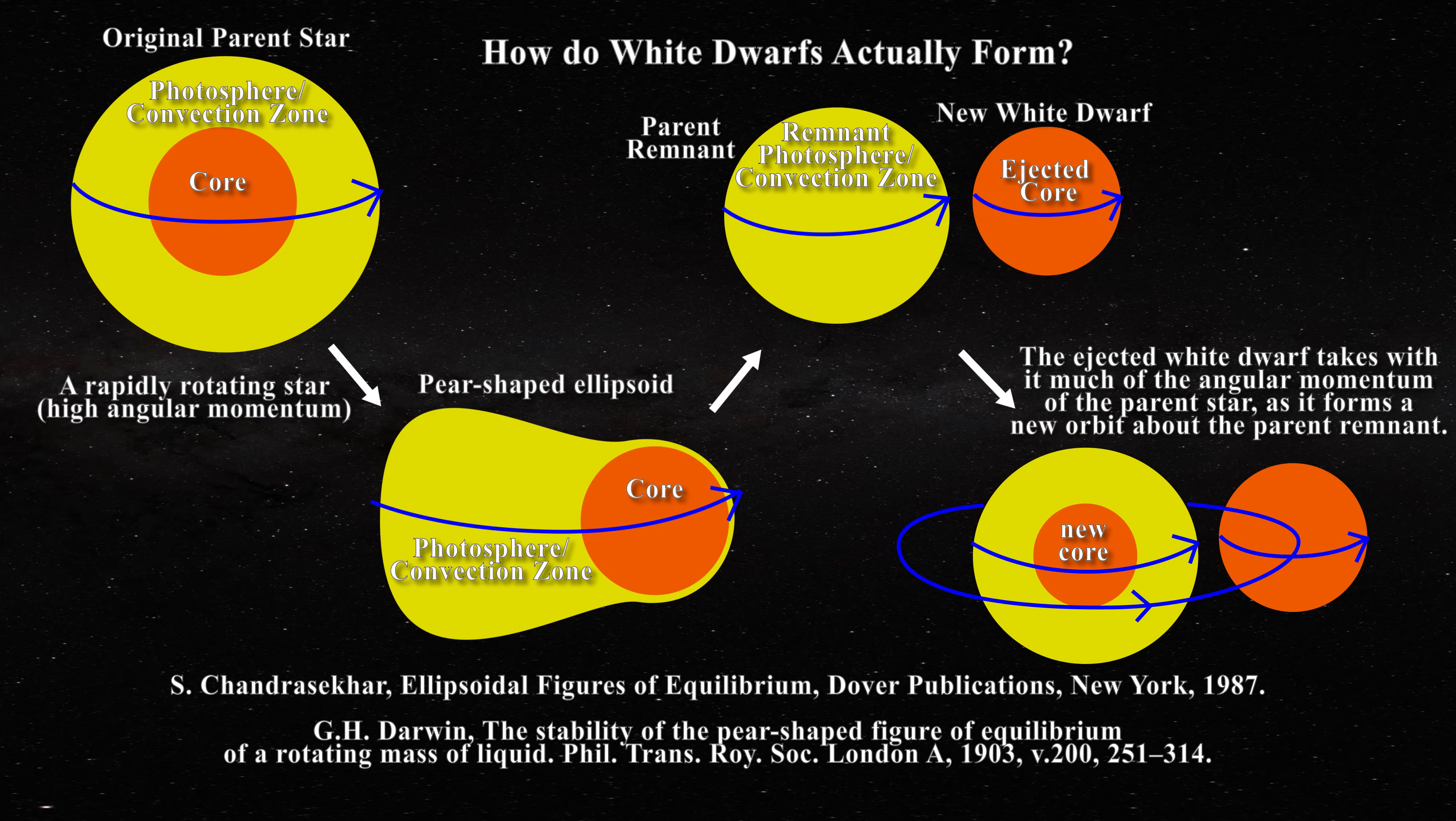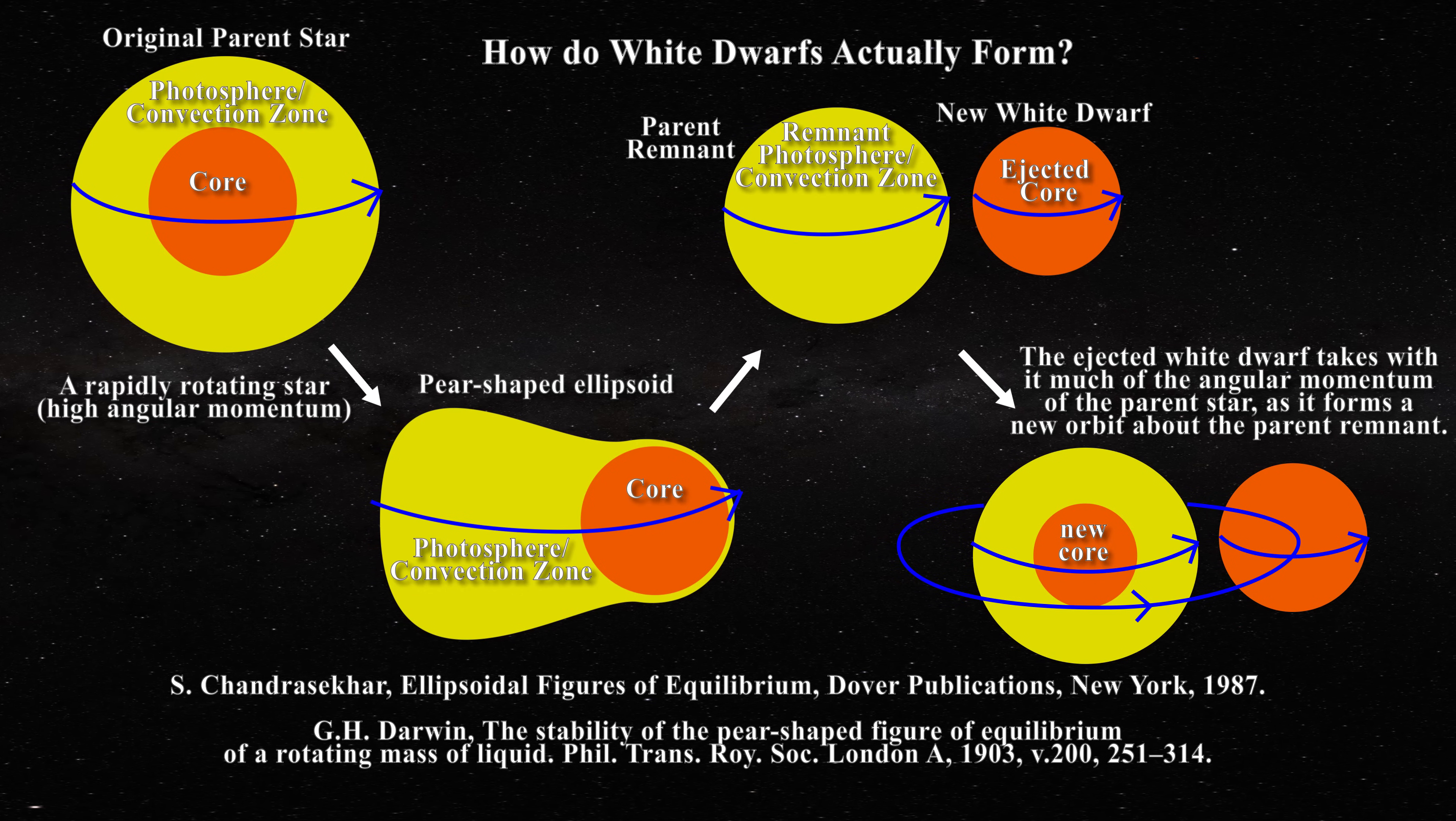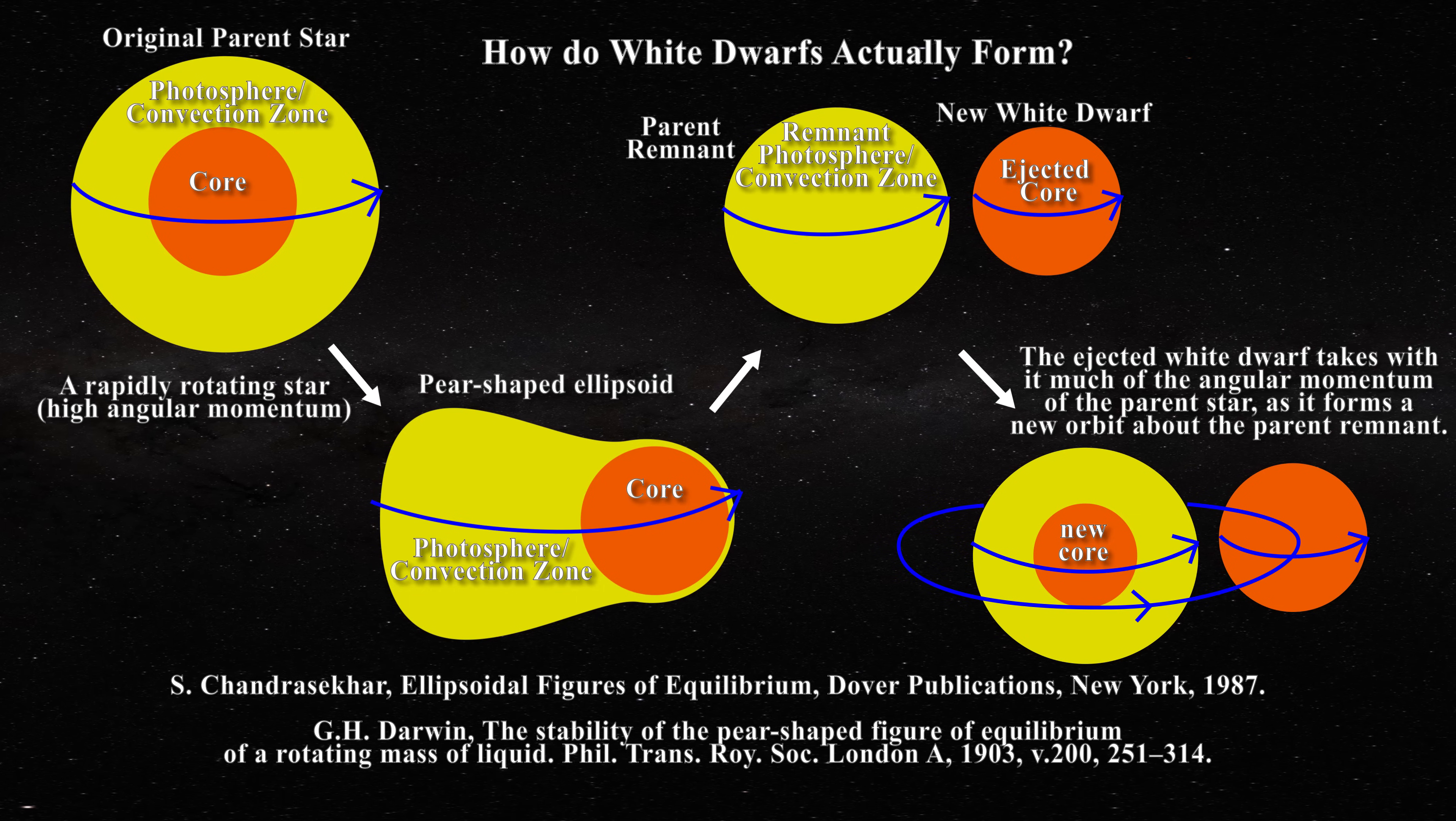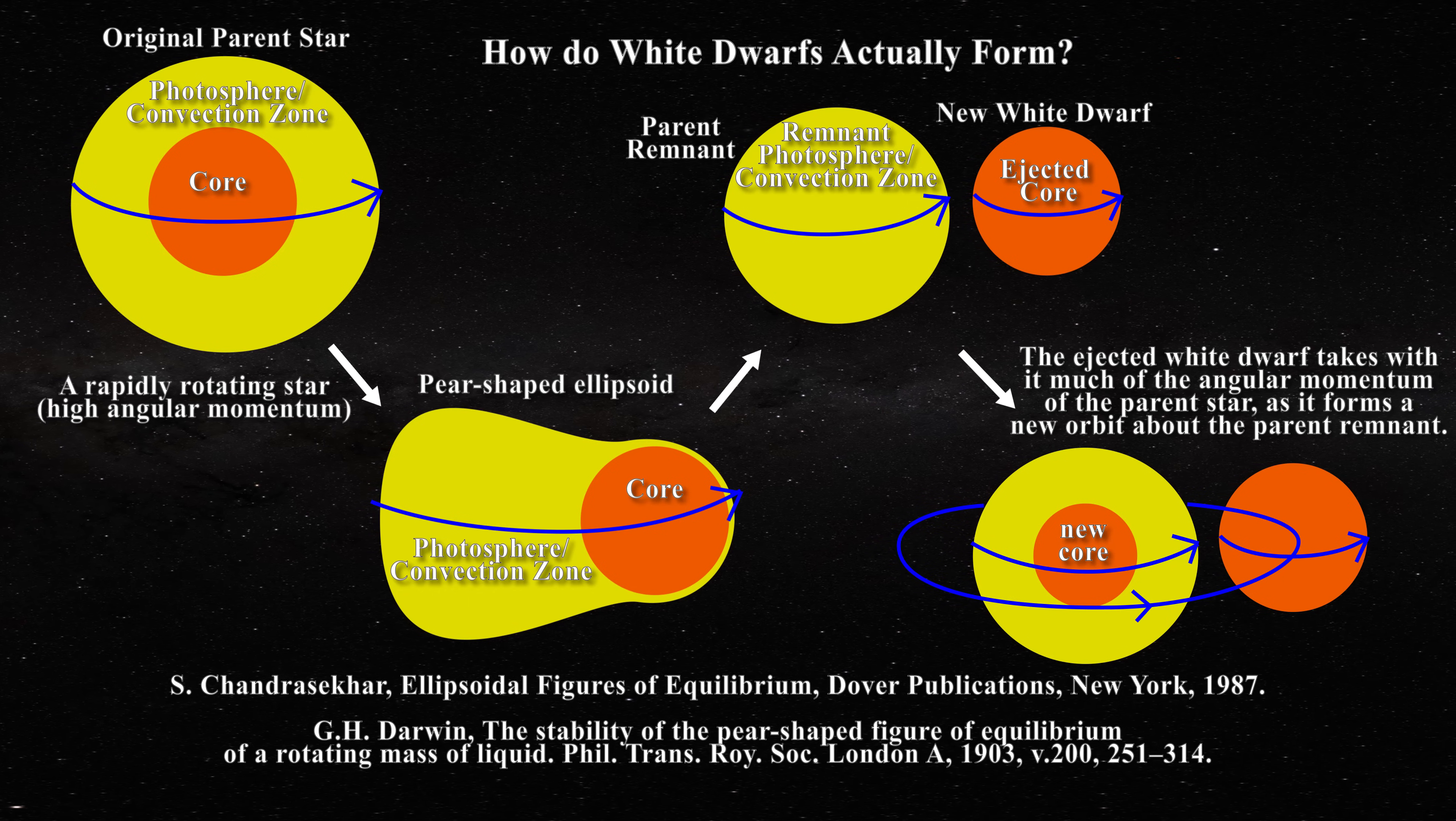Since so many binary star systems exist, such a mechanism is reasonable and could account for systems such as Sirius A and B, for instance. The white dwarf, in this case originating from a more massive star, and hence the parent core from which it came, could have a diamond structure.